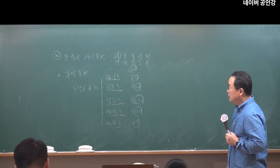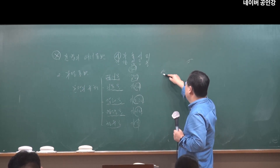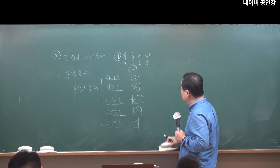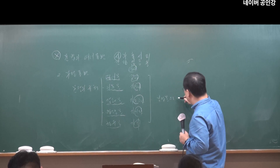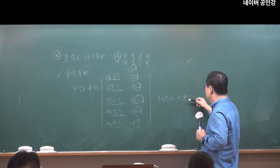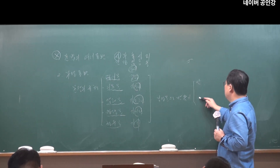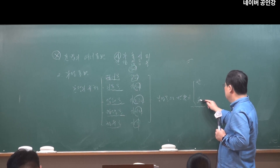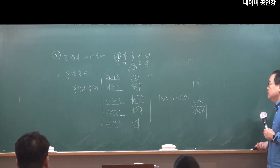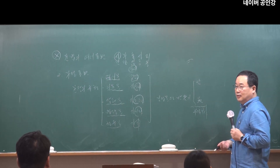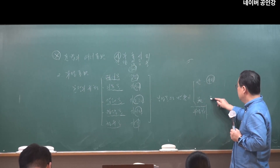이것들을 부정문으로 만들어야 할 경우, 우리 국어에서 부정문을 만들 때 가장 대표적으로 사용되는 것이 '안'과 '못'이라는 부정부사입니다. '안 간다', '못 간다'인데, '안'은 주로 의지를 부정할 때 쓰이고, '못'은 능력을 부정할 때 쓰입니다.